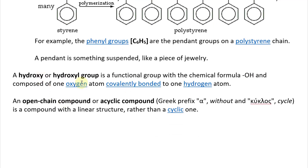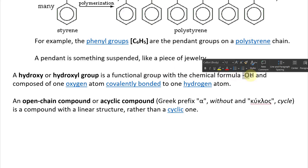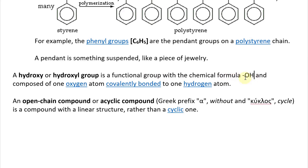A hydroxy or hydroxyl group is a functional group with a chemical formula -OH, composed of one oxygen atom covalently bonded to one hydrogen atom. You're going to see a lot of this hydroxyl group.